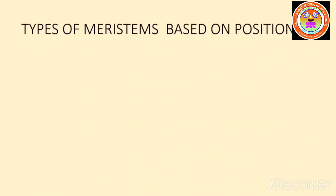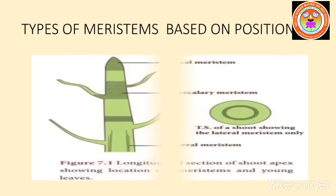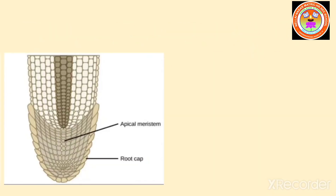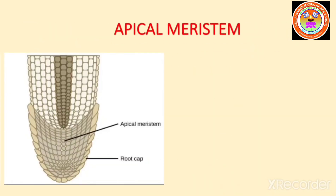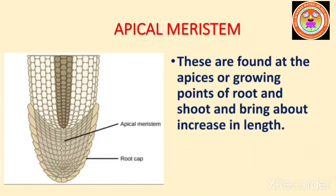Let us now look at the types of meristems based on their position. On the basis of their position in the plant, meristems are of three types: apical meristem, intercalary meristem, and lateral meristem. Apical meristems are found at the apex or growing point of the root and shoot, and bring about an increase in length.